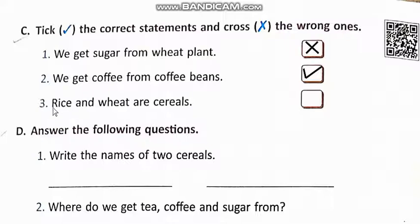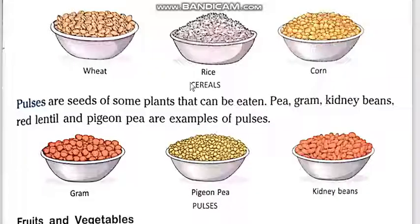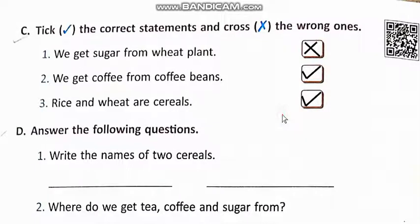Number three: Rice and wheat are cereals. Students, we wrote here some examples of cereals — wheat and rice are cereals. This statement is also correct, so we write tick in front of this statement.